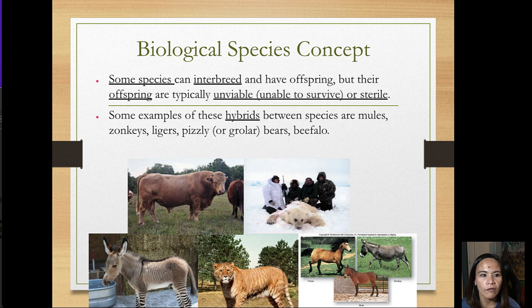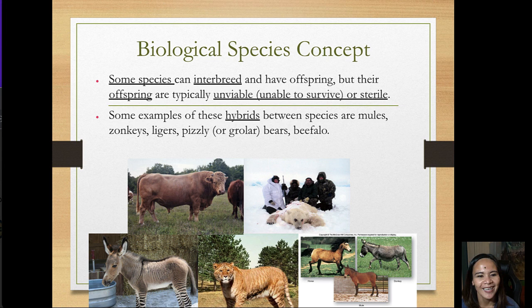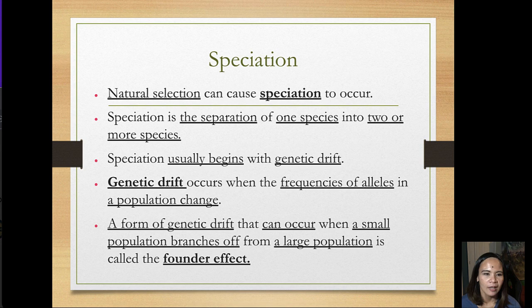Some species can interbreed and have offspring, but their offspring are typically unviable or sterile. Examples of these hybrids between species include mules, zonkeys, ligers, and pizzly bears. These animals do interbreed, but their offspring end up sterile or unviable — that is the biological species concept.